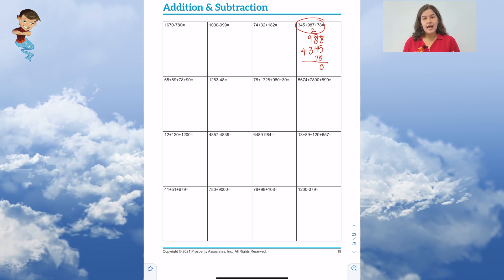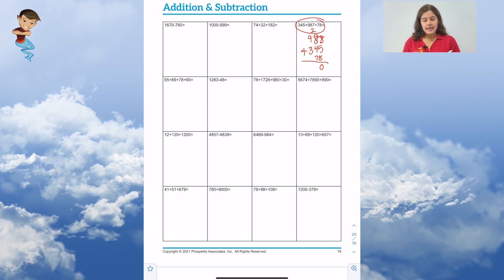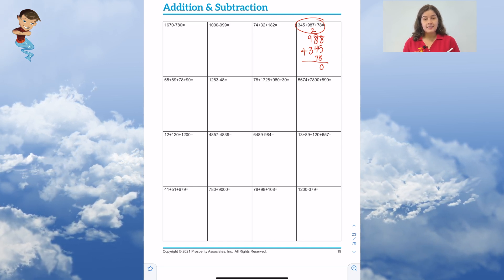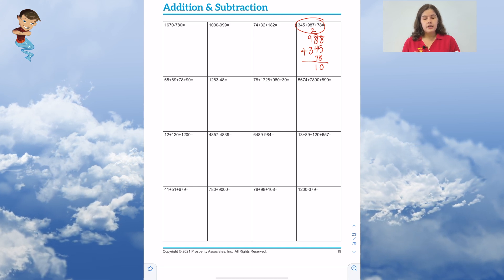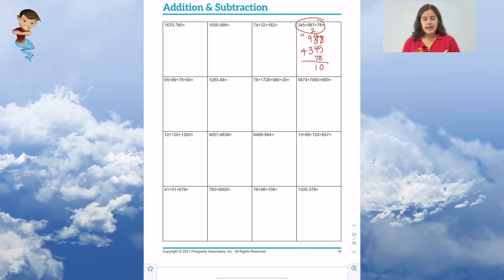Next, we have to add up the numbers in our tens place. 2 plus 8 is 10, plus 7 is 17, plus 4 gives us 21. 1 is going to go below our answer, and we're going to carry our 2.